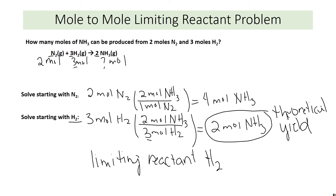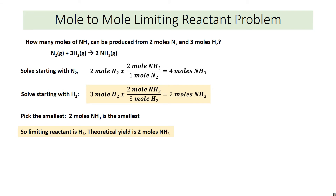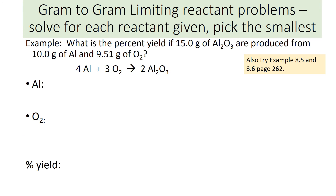That is a mole-mole limiting reactant problem. We can also do this with a gram-to-gram problem — just a few more steps, same process. We solve it twice and take the smallest answer. This next problem combines percent yield and limiting reactant: what is the percent yield if 15 grams of aluminum oxide are produced from 10 grams of aluminum and 9.51 grams of oxygen?